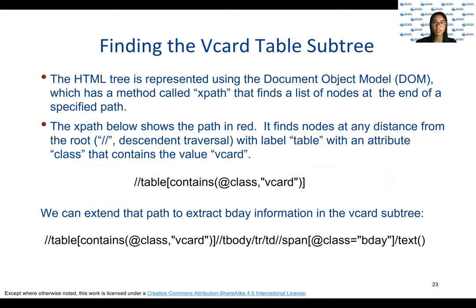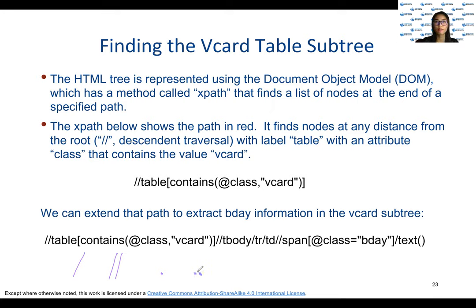XPath has several navigation axes. For example, child is like this, descendant is this, parent is one dot, and ancestor is two dots. These can all be combined in expressions, and conditions can also be specified to restrict matching elements. For example, contains a class vCard — this only returns tables of that class. And over here, text brackets extracts the text at the leaf of the tree.